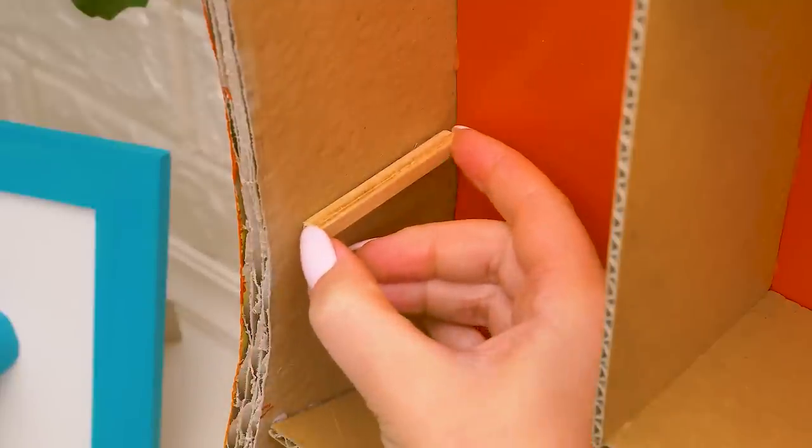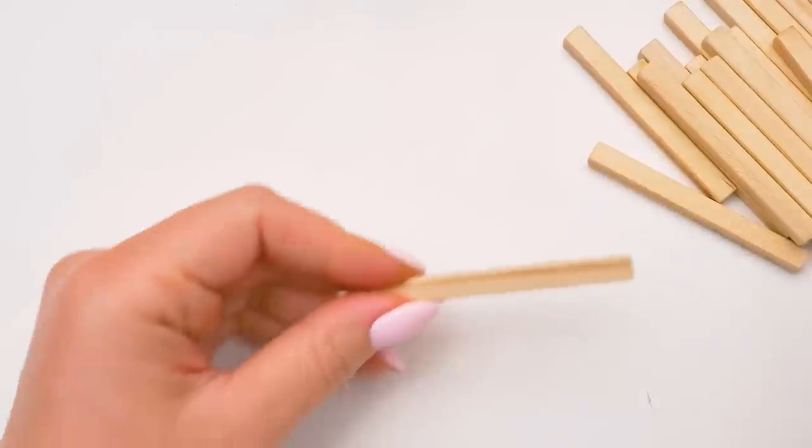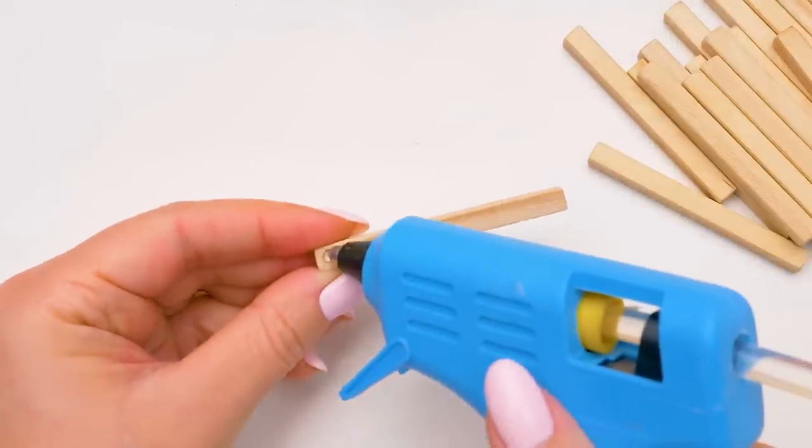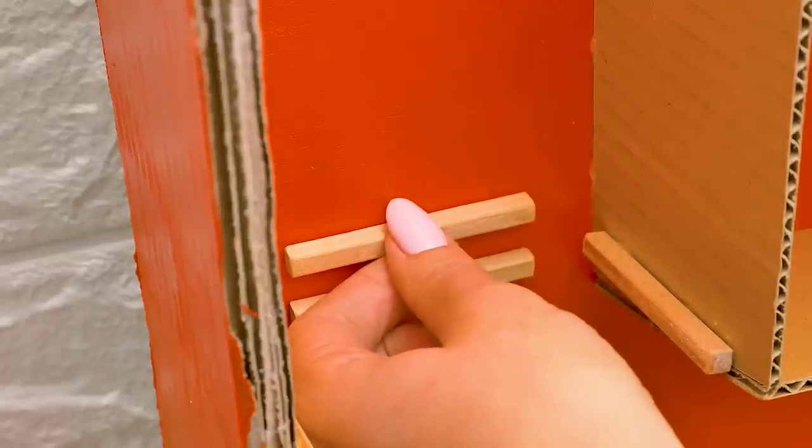Actually, I was already going to make some ladders. Otherwise, how is the hamster going to climb up, right? I'm making them from wooden bar pieces. We need to glue them very well so our hamster doesn't fall down.